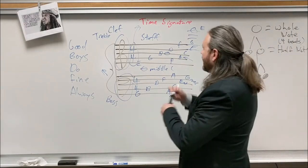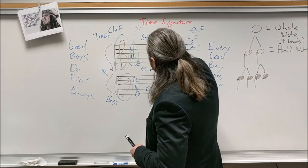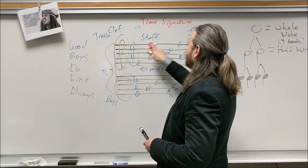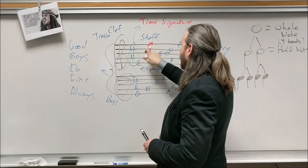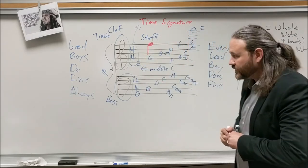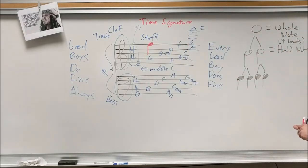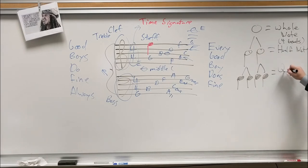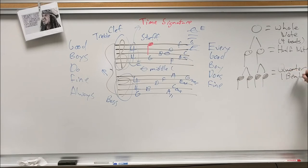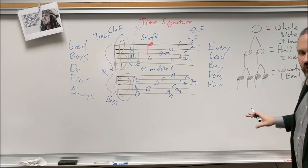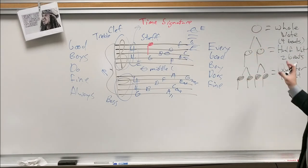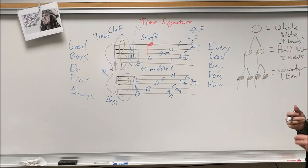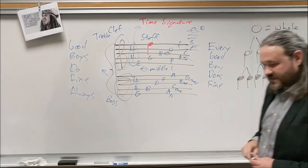When drawing a quarter note on the staff, the line goes straight through the middle of the note head and a stem is attached. That indicates a one-beat note. In 4/4 time, a quarter note equals one beat, and a half note equals two beats. You could also reassign any graphic to be whatever rhythm you want by changing the time signature numbers.